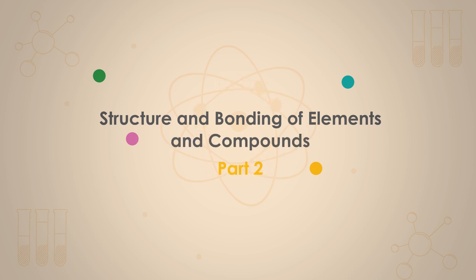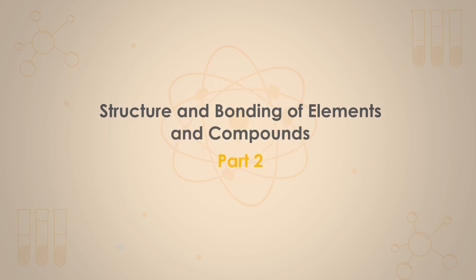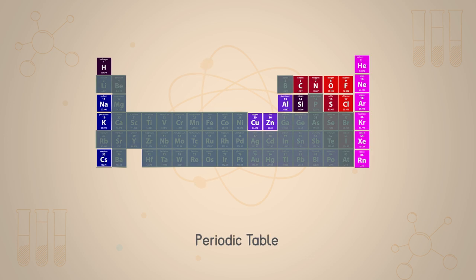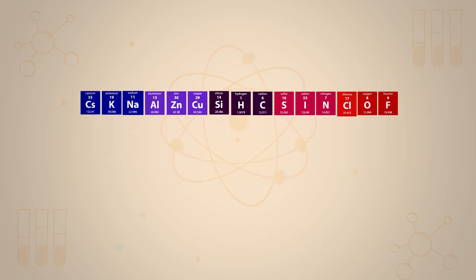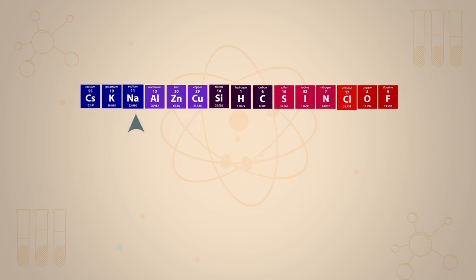Structure and bonding of elements and compounds, part two. In part one of this video we developed a triangular space with the elements arranged along the top from the most reactive metal cesium to the left and the most reactive non-metal fluorine to the right.